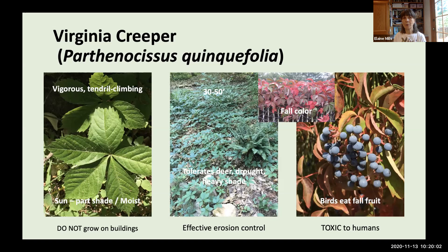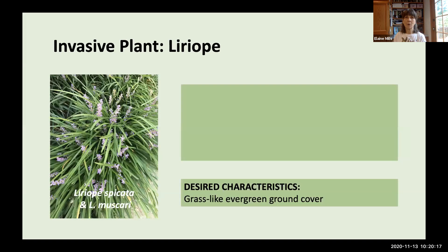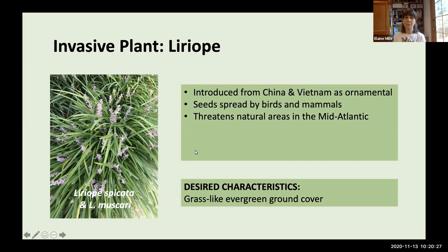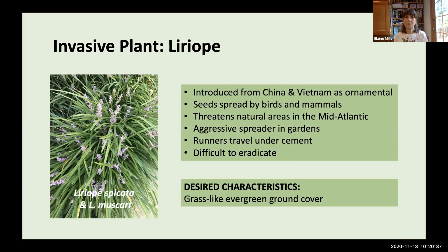Virginia Creeper has an interesting group of five leaves with gorgeous fall color. It grows fruit that birds can eat, but that fruit is toxic to humans. Another invasive ground cover is liriope, introduced from China and Vietnam as an ornamental, spread by seeds via birds and mammals, and now threatening natural areas throughout the Mid-Atlantic. I personally found it a very aggressive spreader — landscapers planted hundreds, and when I tried to remove it, the runners had traveled under the cement of my sidewalks. Years later, I'm still finding stray plants.